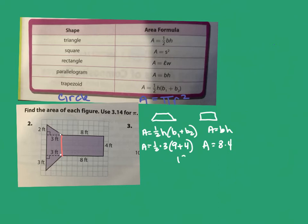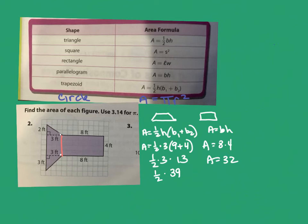For the rectangle, the base is eight and the height is four, so eight times four is 32. For the trapezoid, parentheses first: nine plus four is 13. Then 13 times three is 39, and one-half of 39 — dividing 39 by two — gives 19.5.